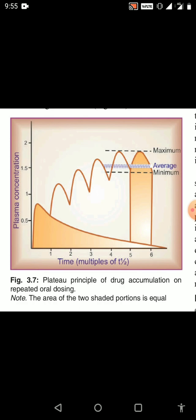Up to four to five half-lives the graph is increasing, showing an increased slope. But after four to five half-lives, the plasma concentration stops increasing. What is happening is fluctuation in the plasma concentration of the drug. This fluctuation at or after four to five half-lives of the drug is called steady state plasma concentration.